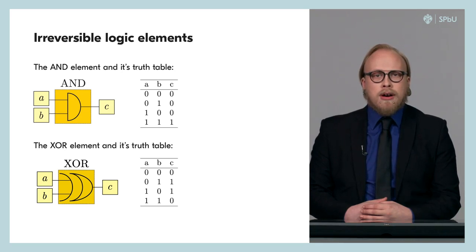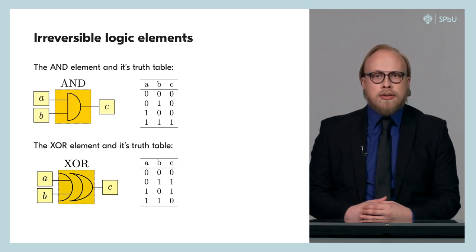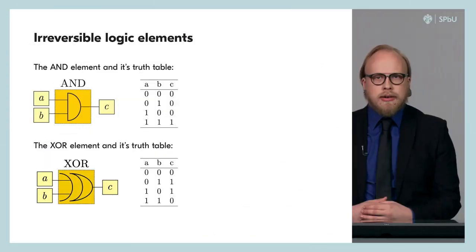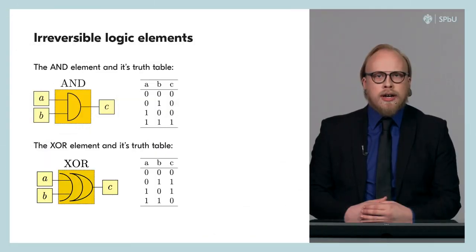For XOR and OR, there are also situations when several different values of bits A and B can correspond to the value of bit C. All these elements — XOR, AND, OR, and many others — are called irreversible. That is, by the result at their output, in the general case, we cannot say exactly which values of bits A and B were at their input. Furthermore, switching circuits compiled using irreversible elements are also irreversible — for example, those we considered for the adder and half-adder in the last lesson.